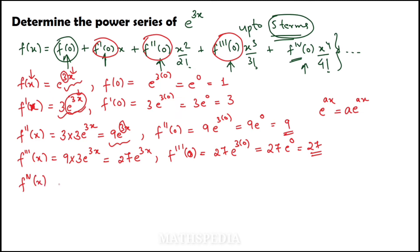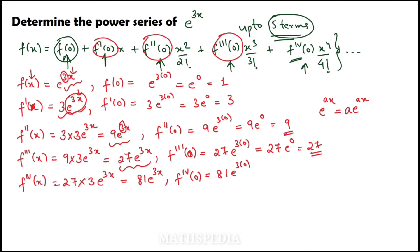Next, the fourth derivative: differentiating 27e^(3x), I bring down another 3, giving f''''(x) = 81e^(3x). So the function value at x = 0 is f''''(0) = 81·e^(3×0) = 81·e^0 = 81. I have now got all the values to substitute into the series.